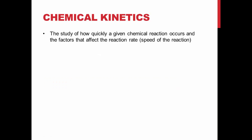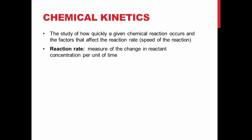Chemical kinetics is a study of how quickly a given chemical reaction occurs and the factors that can affect the rate. It essentially describes the speed of a reaction. The definition of reaction rate is the measure of the change in reactant concentration per unit of time.